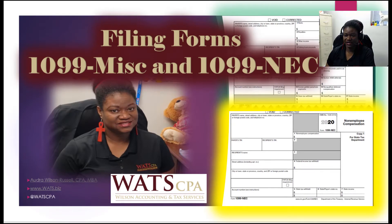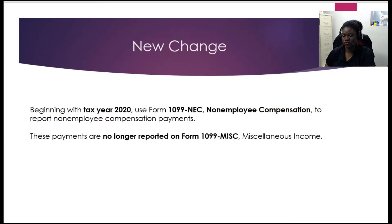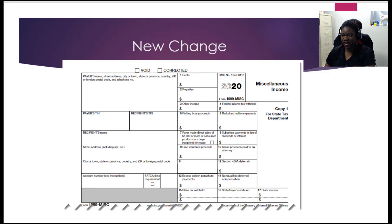Let's jump right into it. Beginning with tax year 2020, businesses are now required to file non-employee compensations on form 1099 NEC. They are no longer reporting those payments on 1099 Miscellaneous. This is the new 1099 Miscellaneous — as you can see, Box 7 no longer has the non-employee compensation.